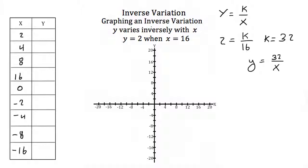Plugging in x equals 2 gives y equals 32 over 2 equals 16, so we have point (2,16). For x equals 4, y equals 8. For x equals 8, y equals 4. And for x equals 16, y equals 2.